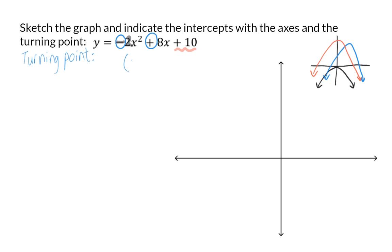We just determined that the turning point is at 2, 18, and in the previous video, we learned that the y-intercept can be seen in the standard form by looking at the constant value at the end, so that will be 0 and 10.